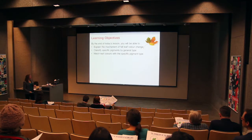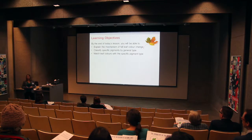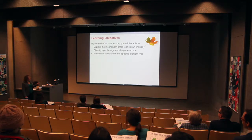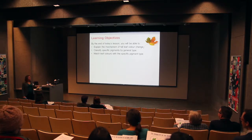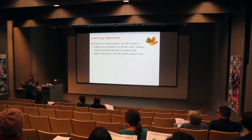So the goal of tonight's lecture is to get you to have a good idea about the mechanism of this autumn leaf color change, and also to think about the specific pigments from their chemical structures, and classify specific pigments by their general type, and then also make sure that we know what kinds of pigments typically have which color, so that next year when you see the leaves change, you'll remember what kind of pigment that is.